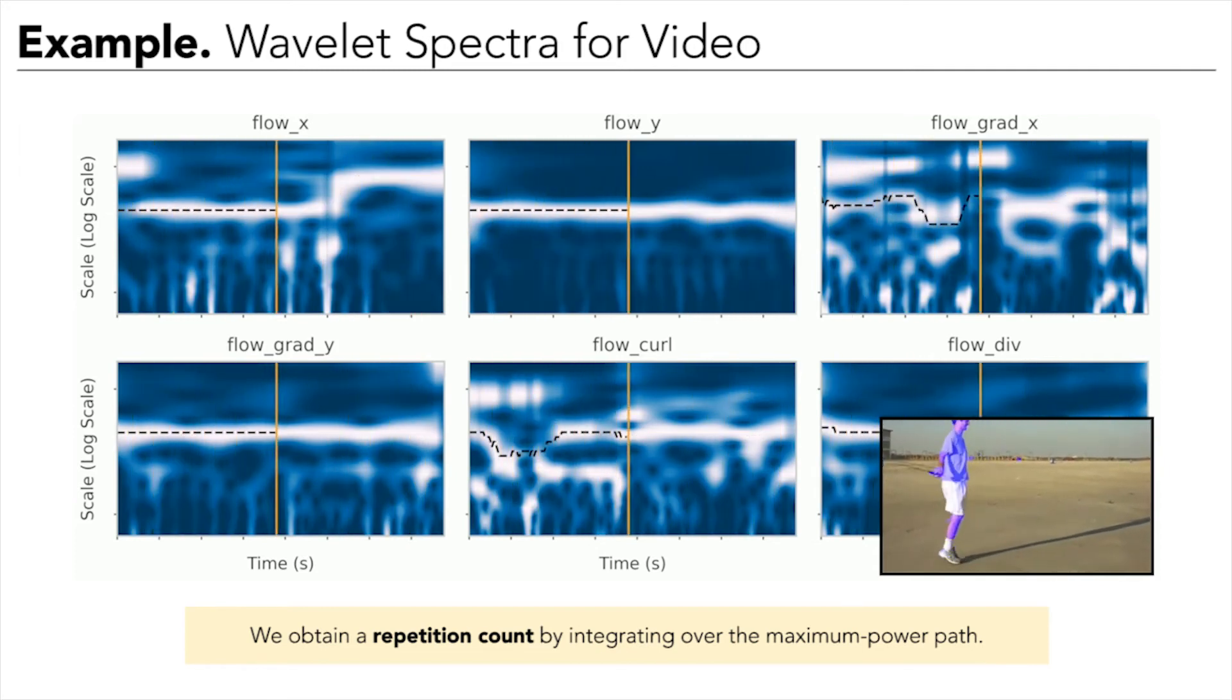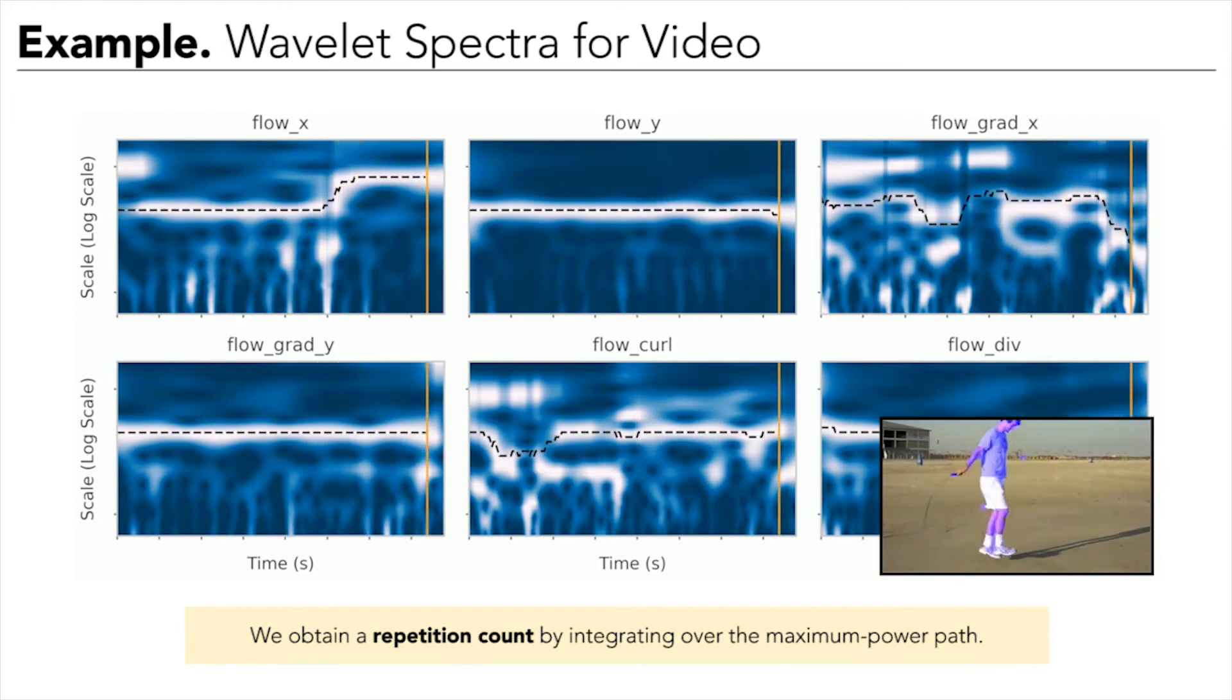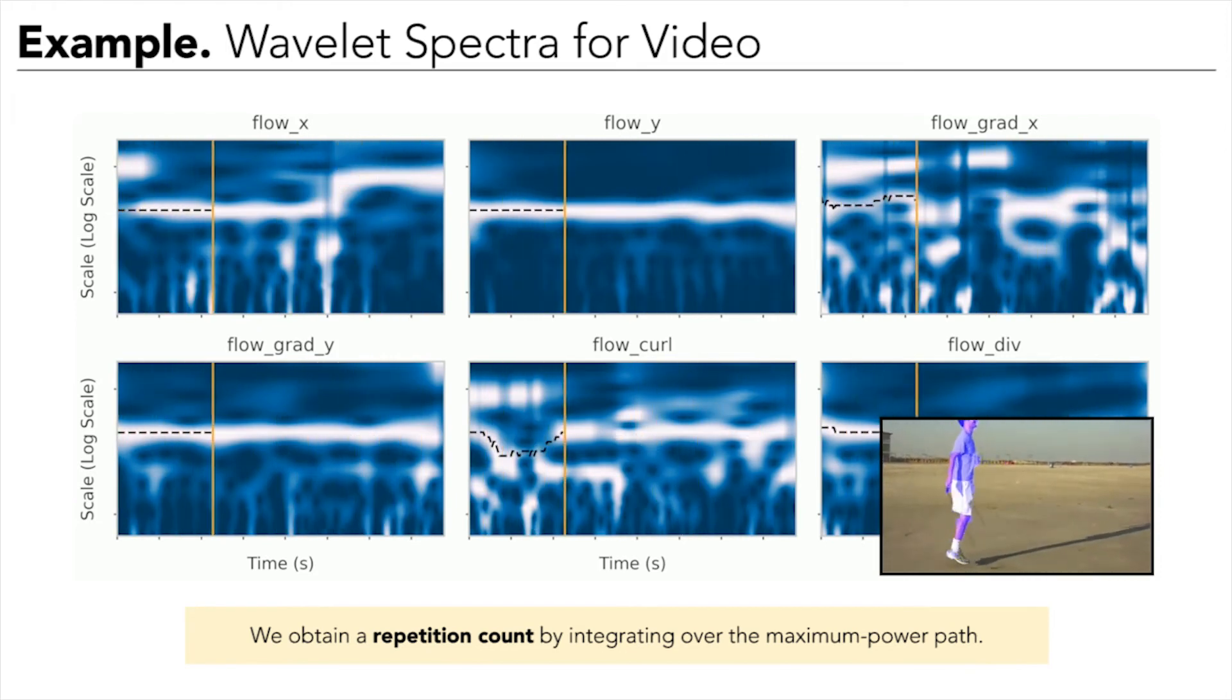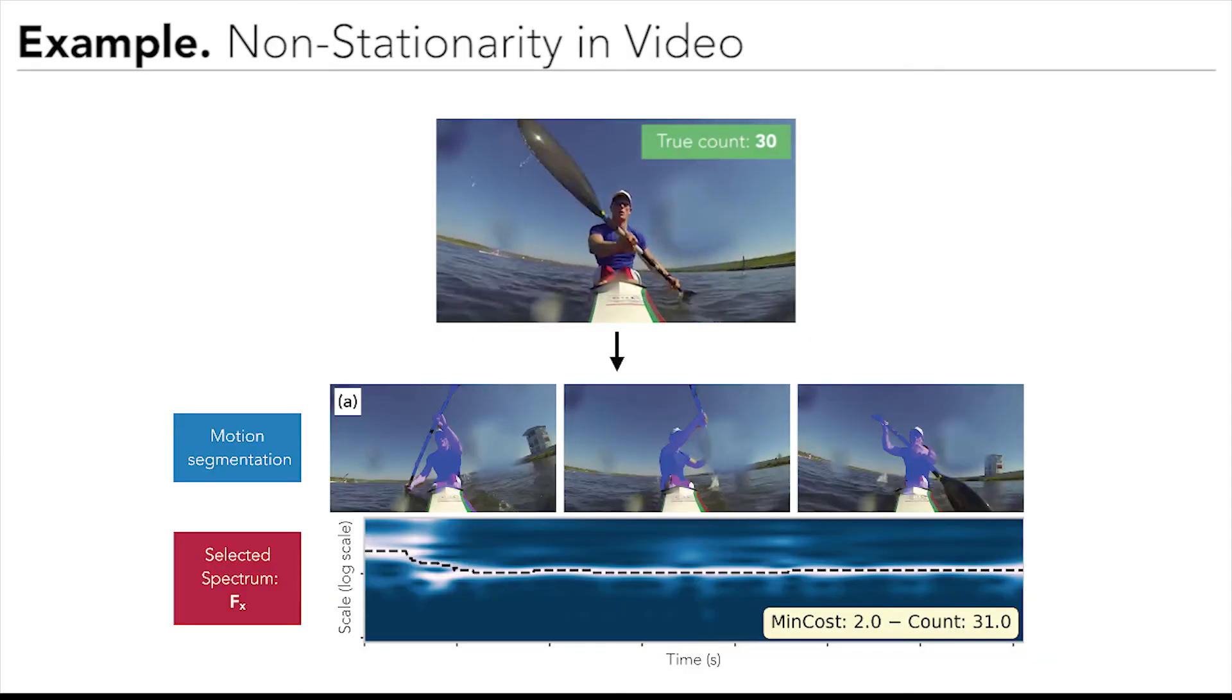We evaluate on the task of repetition counting, as a count remains meaningful in the presence of non-stationarity. And in this example, the acceleration of the rower after a couple seconds clearly shows up in the wavelet spectrum as a drop in the motion period with the strongest power.